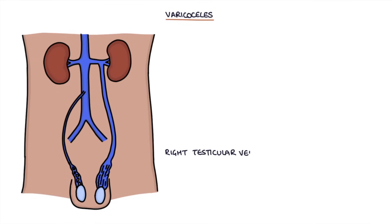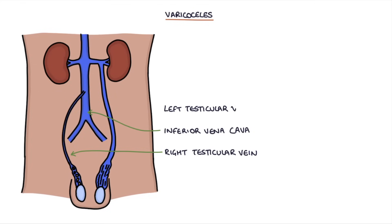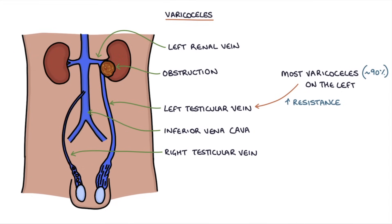The right testicular vein drains directly into the inferior vena cava. The left testicular vein drains into the left renal vein. Most varicoceles, around 90%, occur on the left due to increased resistance in the left testicular vein. A left-sided varicocele can indicate an obstruction of the left testicular vein caused by a renal cell carcinoma.